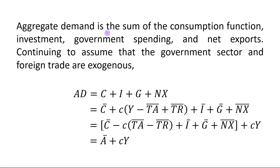Aggregate demand is the sum of the consumption function, investment, government spending, and net exports. Continuing to assume that the government sector and foreign trade are exogenous, AD can be written as C plus I plus G plus NX. After some calculation we will derive the final result, so now I will show you this calculation.